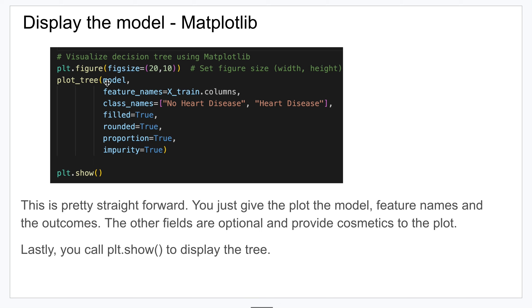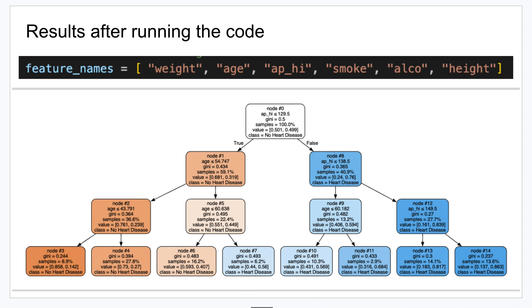You just give the plot the model, give it the feature names that you want to include - you can just use the variable from above - and then what are your outcomes, and that's really just for the display, you can put whatever you want in here. Then everything else is cosmetics, making it look nice when it displays.